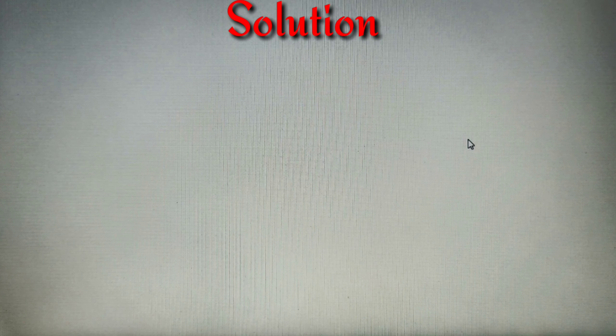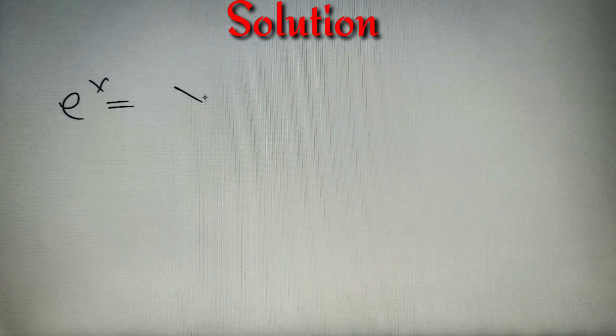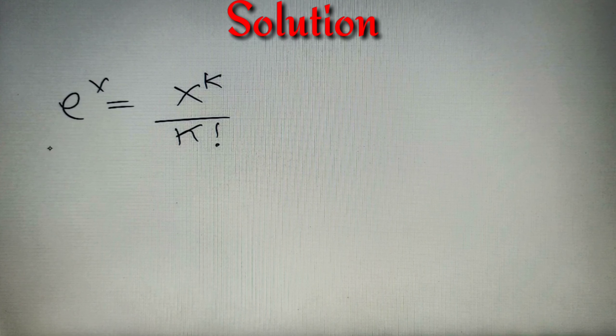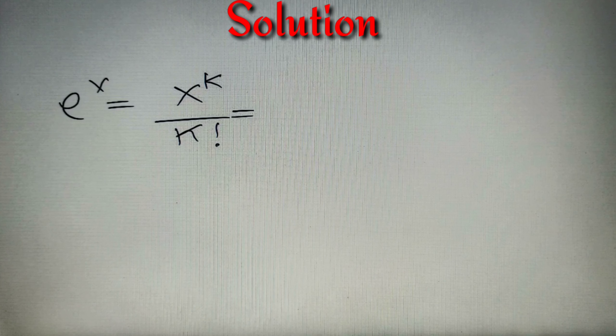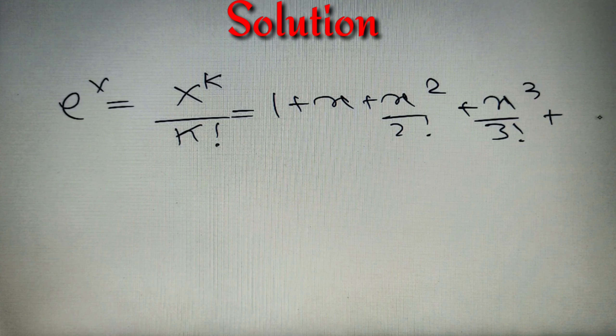I hope you are ready with an answer. We have to check which number is larger: e to the power pi, or pi to the power e. Now, I hope you are aware of the series e to the power x, which equals the sum of x^k divided by k factorial, where k starts from 0 and goes up to infinity. The series equals 1 + x + x²/2! + x³/3! and so on.